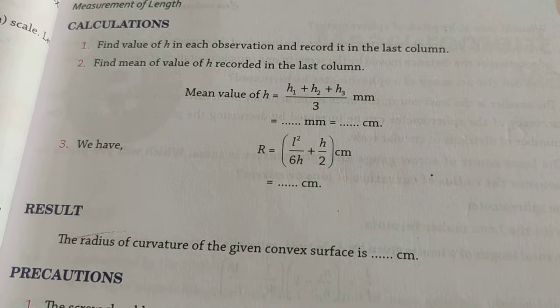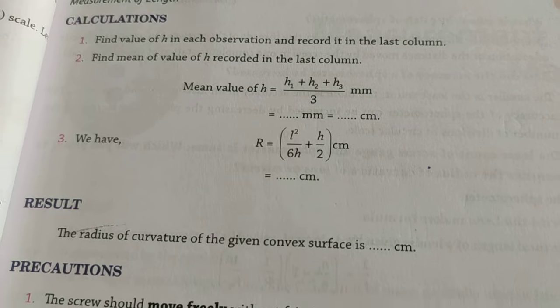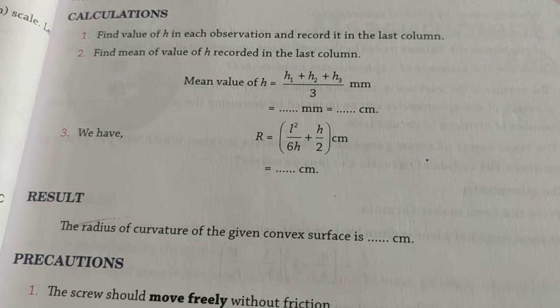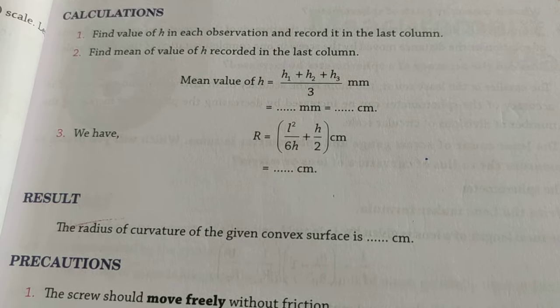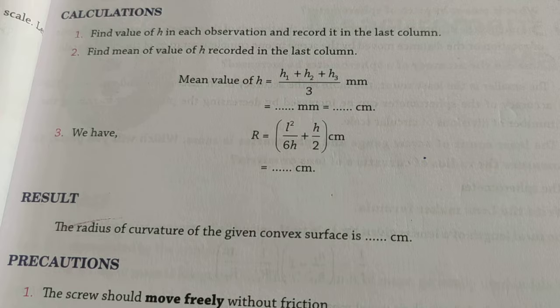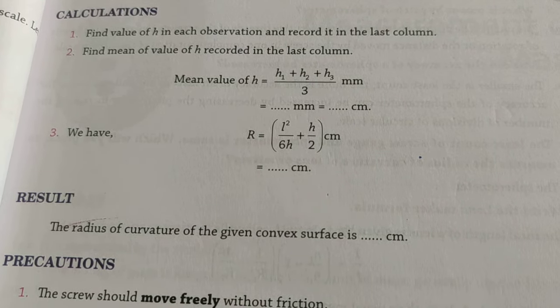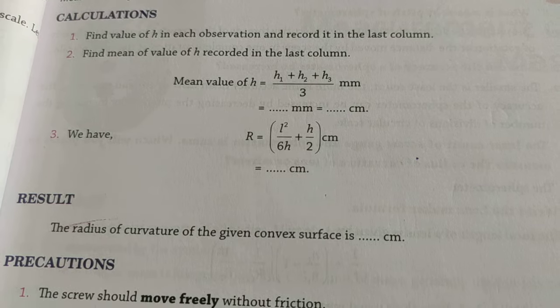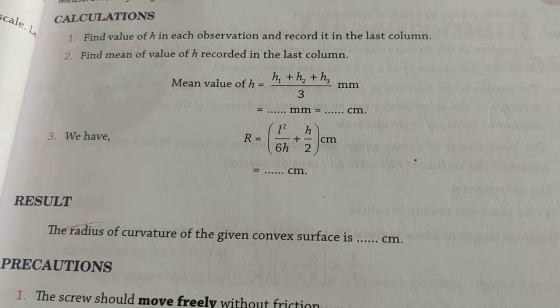Now we have to find the radius of curvature of the convex lens. The formula is r equals l square upon 6h plus h upon 2 cm. This means we have to calculate the value of l and value of h using the spherometer. So let us see how to find the value of l.